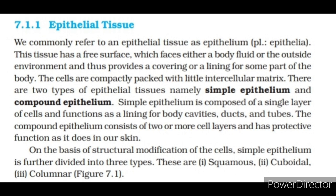Epithelial tissue: We commonly refer to an epithelial tissue as epithelium (plural: epithelia). This tissue has a free surface which faces either a body fluid or the outside environment and thus provides a covering or a lining for some part of the body. The cells are compactly packed with little intercellular matrix. There are two types: simple epithelium, composed of a single layer of cells lining body cavities, ducts and tubes; and compound epithelium, consisting of two or more cell layers with a protective function as in our skin.